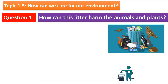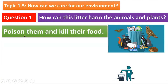Here are the three things people do that are bad for the environment. Question one from your science learner's book: how can this litter harm the animals and plants? The litter poisons their food and kills it, so animals don't have food anymore. They are going to die because of the bad environment, and people litter outside instead of in the bin.